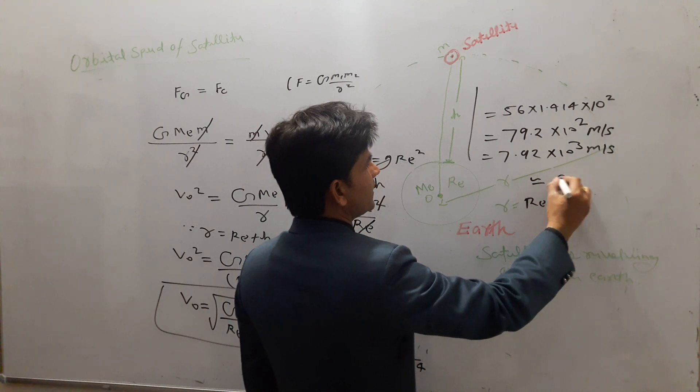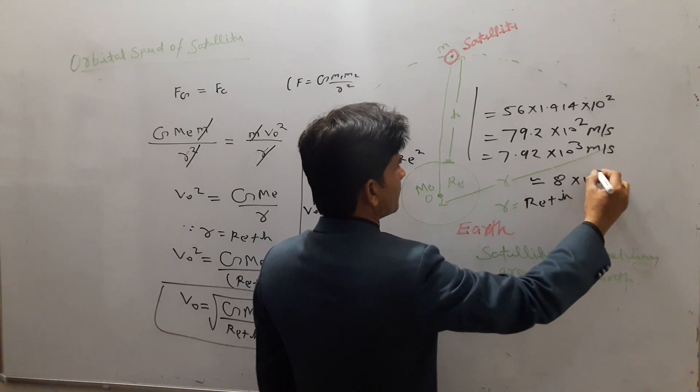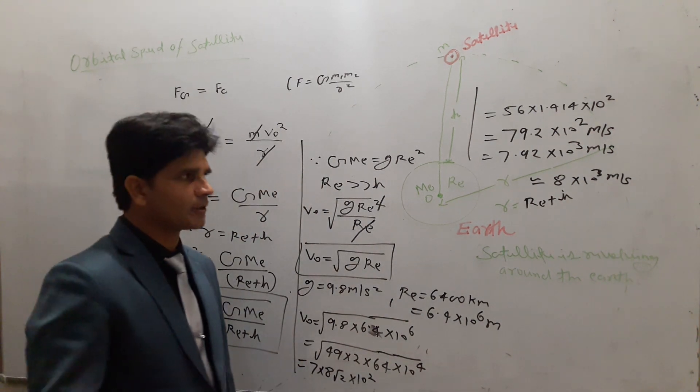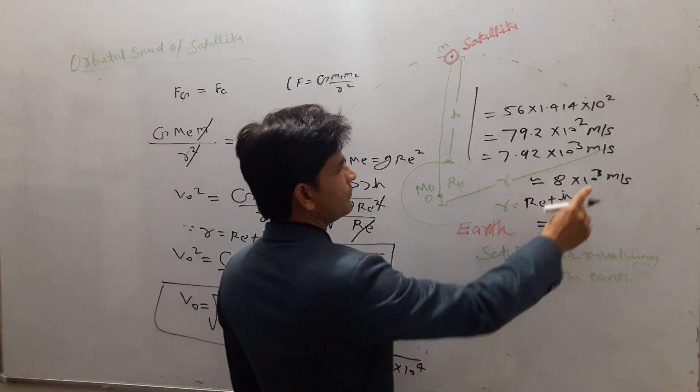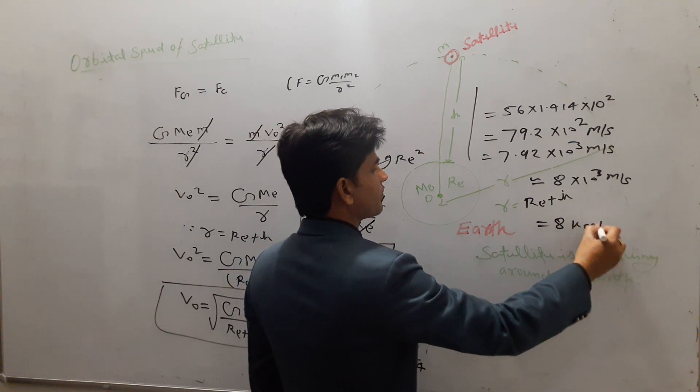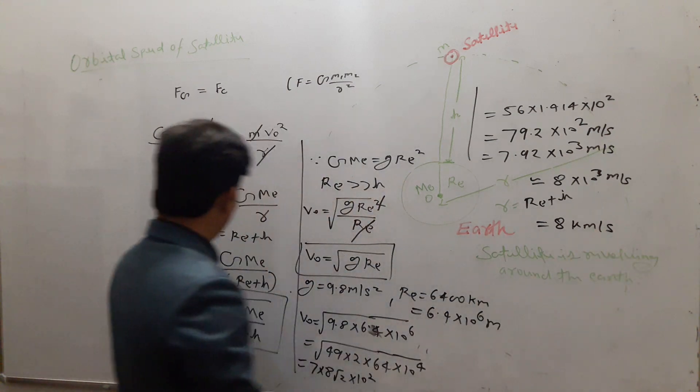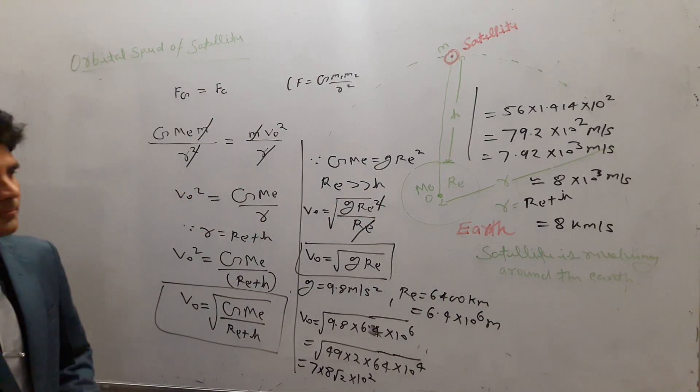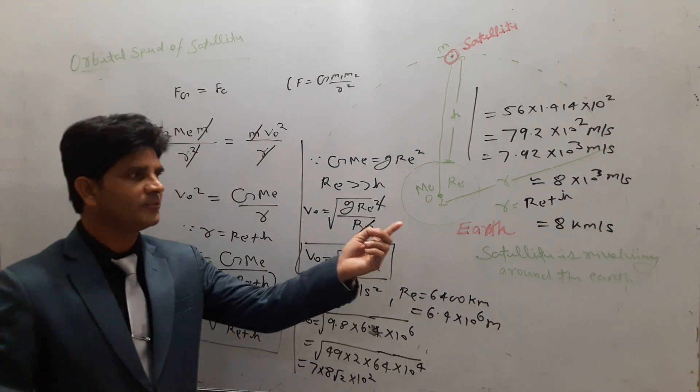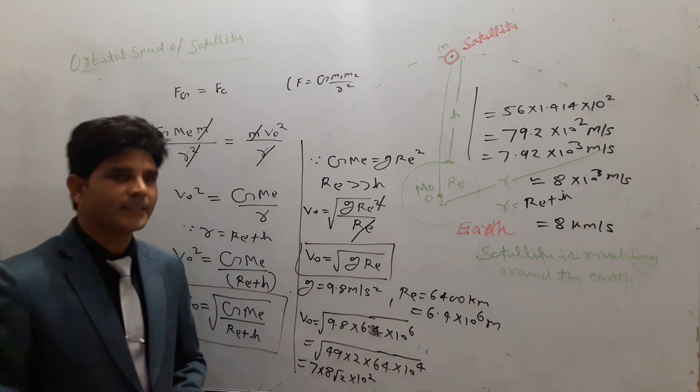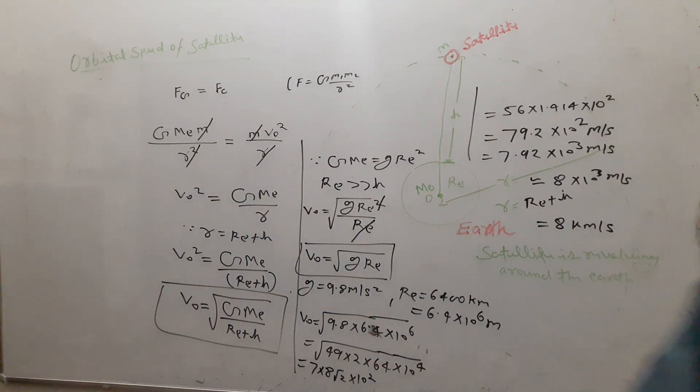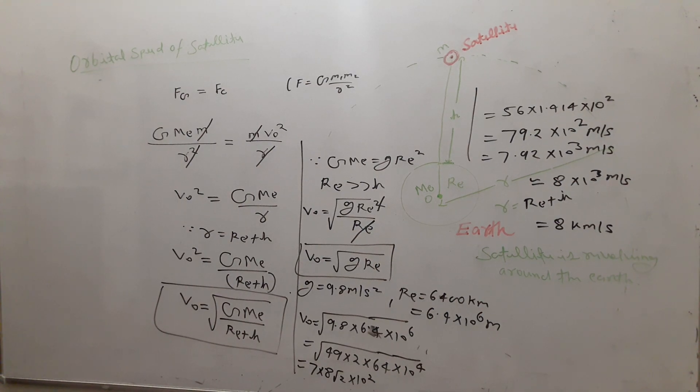Which is approximately equals to 8 × 10³ m/s. If we convert it to kilometers, then 10³ divided by 1000 gives us 8 kilometer per second. The conclusion is this: the orbital speed of a satellite revolving very close to the Earth's surface is just 8 kilometer per second. That's all. Thank you.